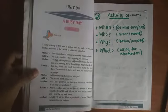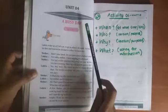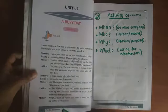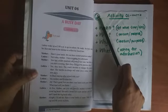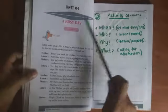Welcome you all to Grade 7 English online class. Today we are going to start Unit number four, A Busy Day. Take out your English pupils book and turn to page number 42. We are going to discuss Activity number one and Activity number two today.